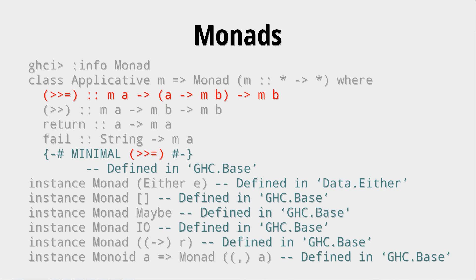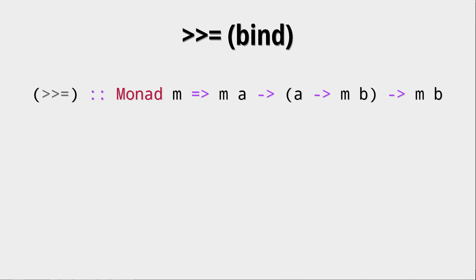So let's look at the very important thing, this greater-greater-equals operator. It is also called bind. And it works like this: we get a monad of type A, and a function A to monad B, and then we get a monad B.